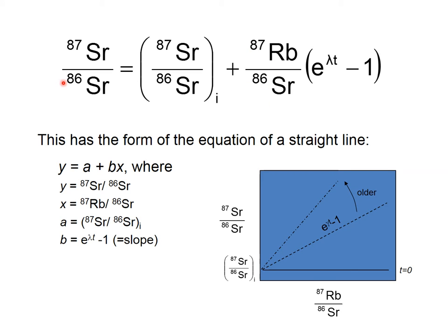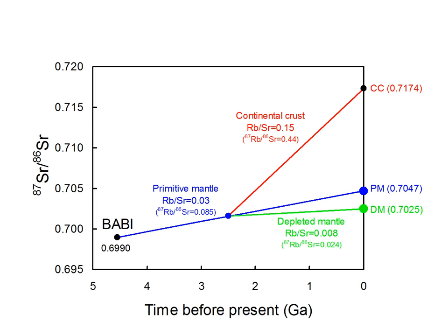Over time, the ⁸⁷Sr/⁸⁶Sr ratio will increase as rubidium decays to strontium, making this ratio bigger. The rate at which this number increases depends on the rate of radioactive decay, which is fairly constant, but also on the ratio of rubidium to strontium in the sample. Something with a very high Rb/Sr ratio will increase its ⁸⁷Sr/⁸⁶Sr ratio more quickly than something with a low ratio.